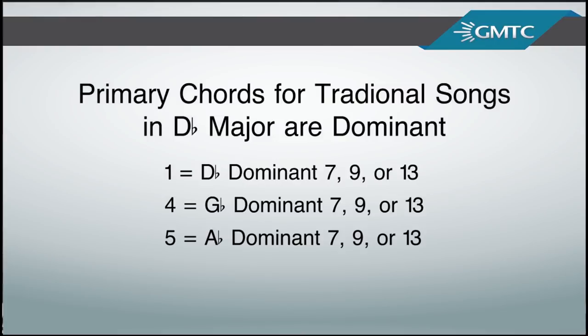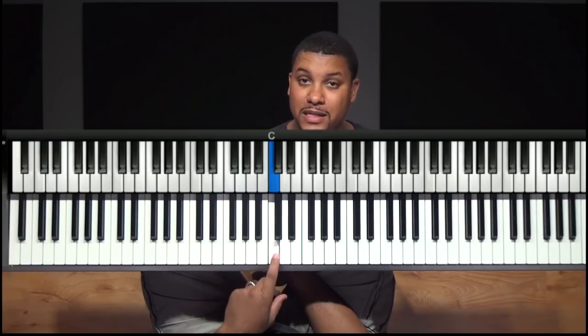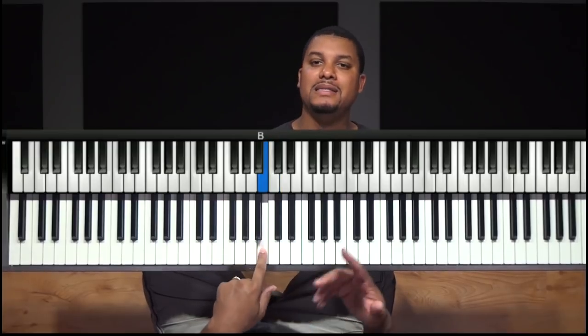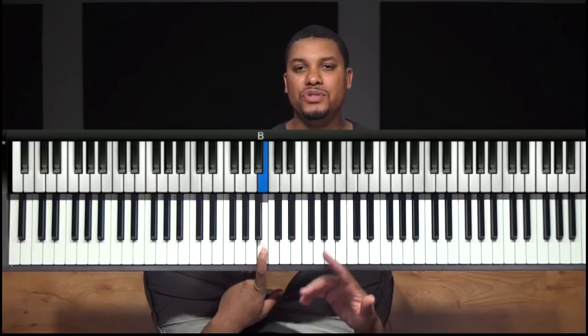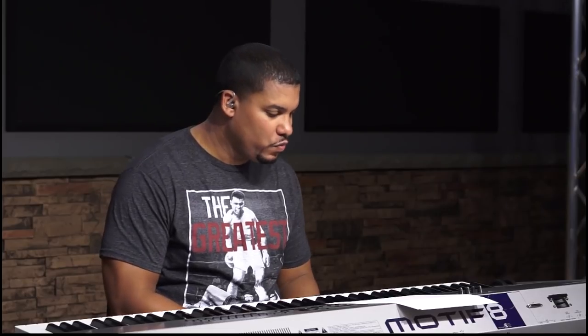What does dominant mean? A dominant chord involves the flat seven. You have a major seven and then you have a dominant seven — the dominant seven is the flat seven. Looking at the scale of D-flat: one, two, three, four, five, six, seven — this is the major seven of D-flat, but this is the dominant seven. This tone gives you that bluesy style, that churchy vibe. So when it comes down to the one, four, and the five, what gives you that sound is adding the flat seventh of those particular tones.